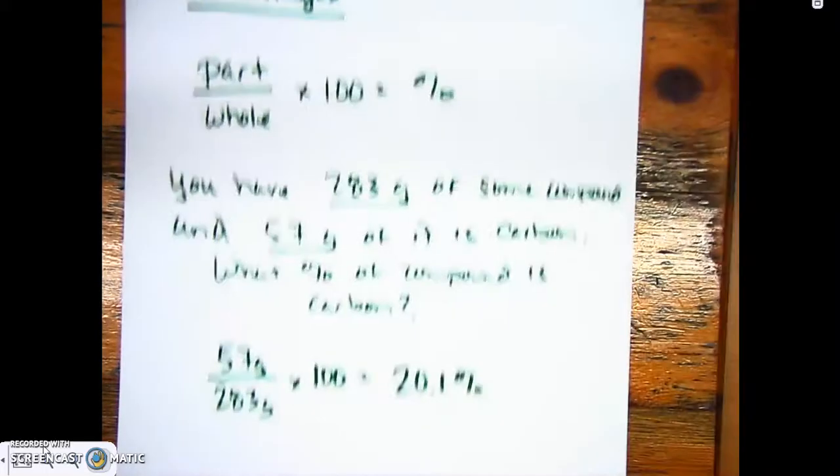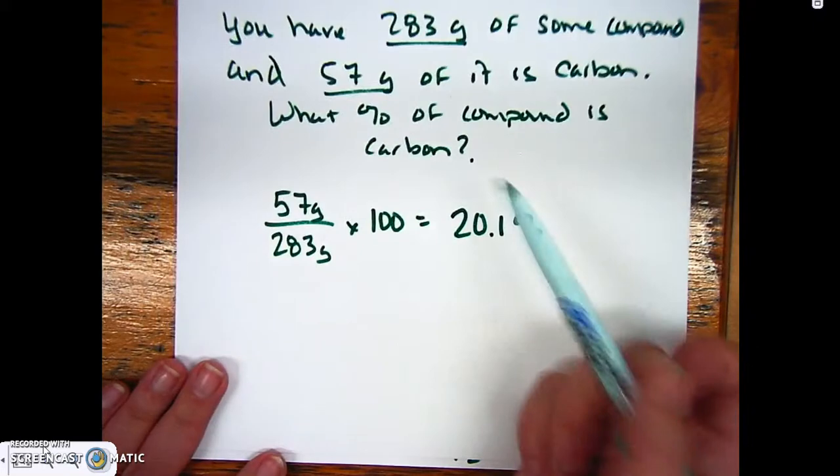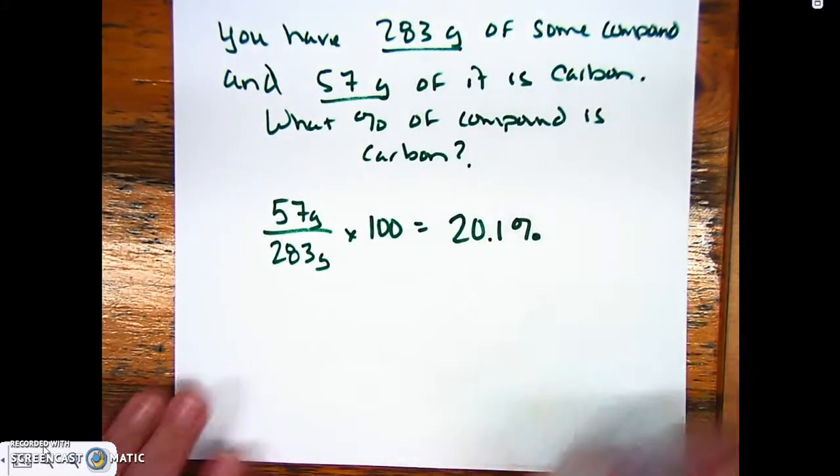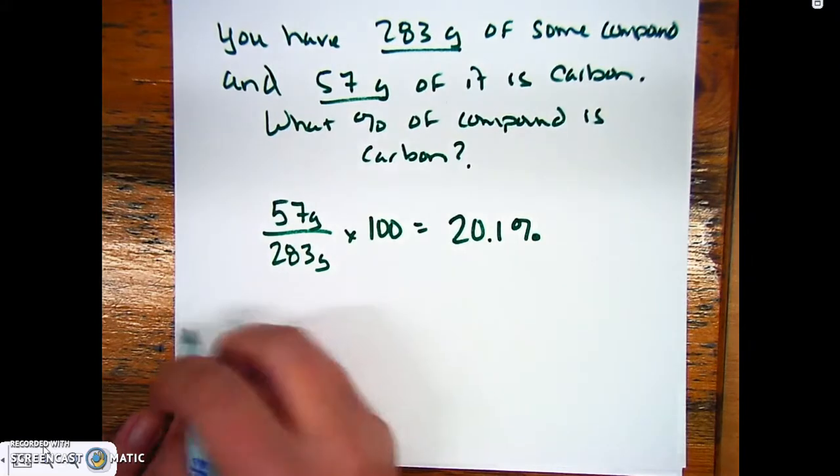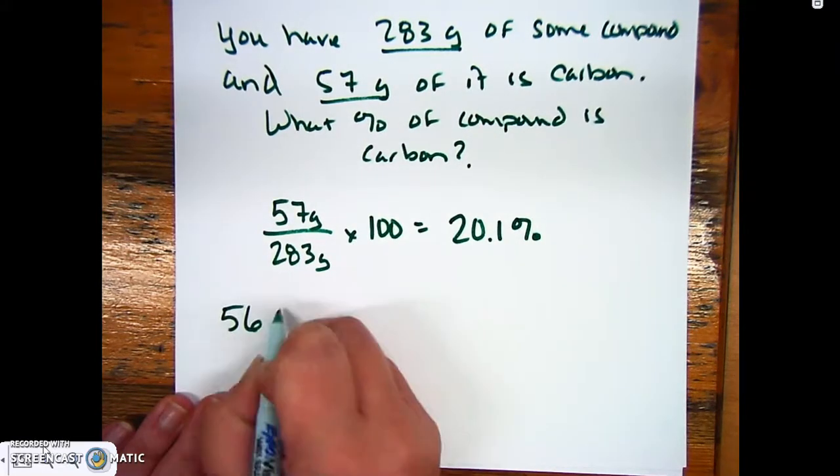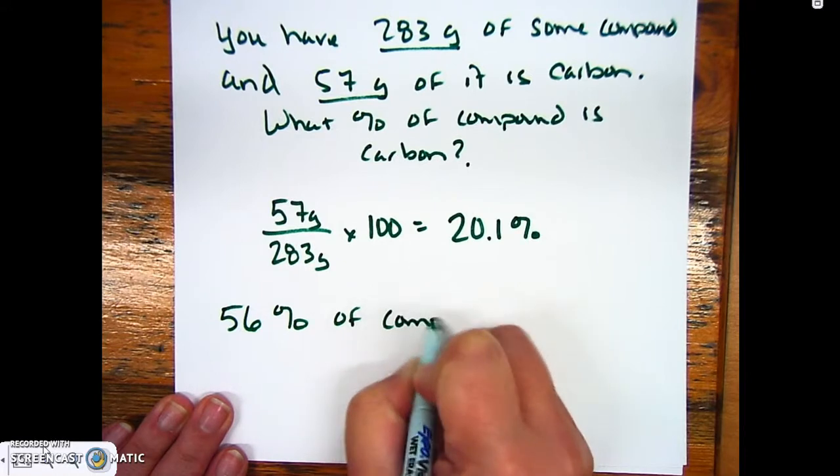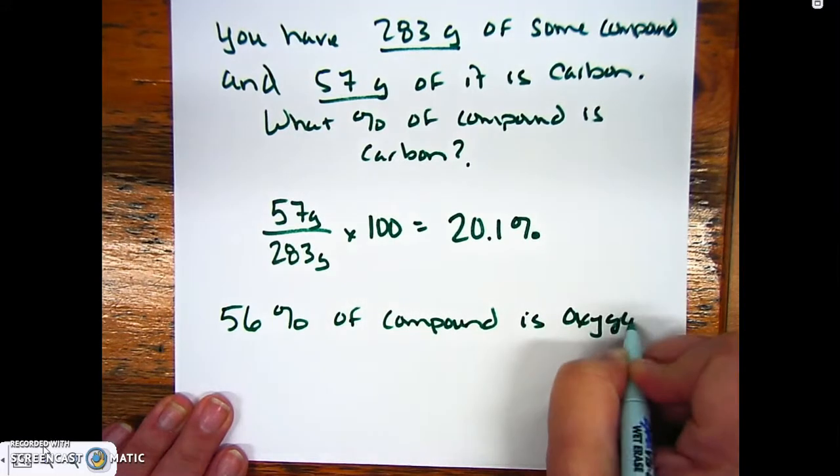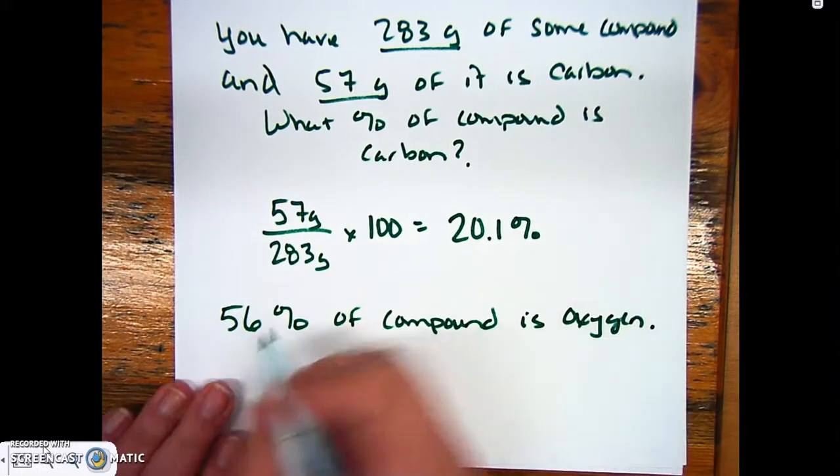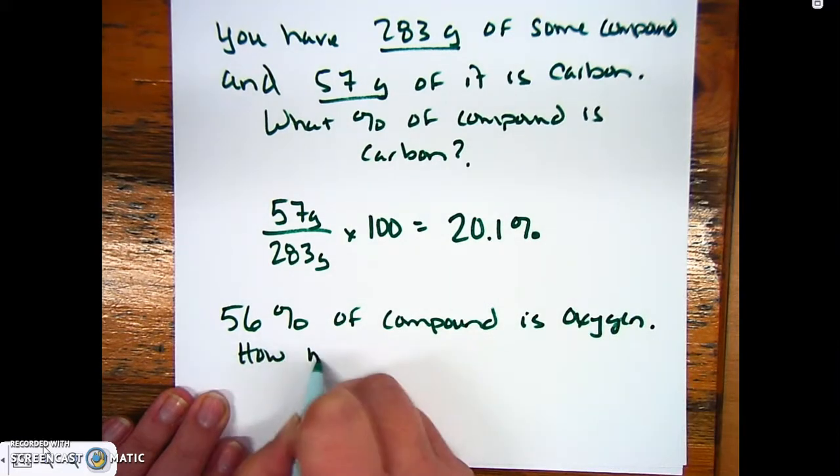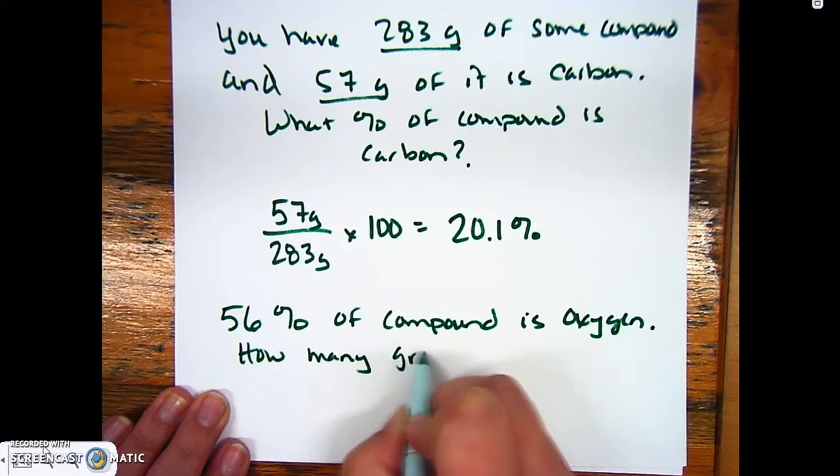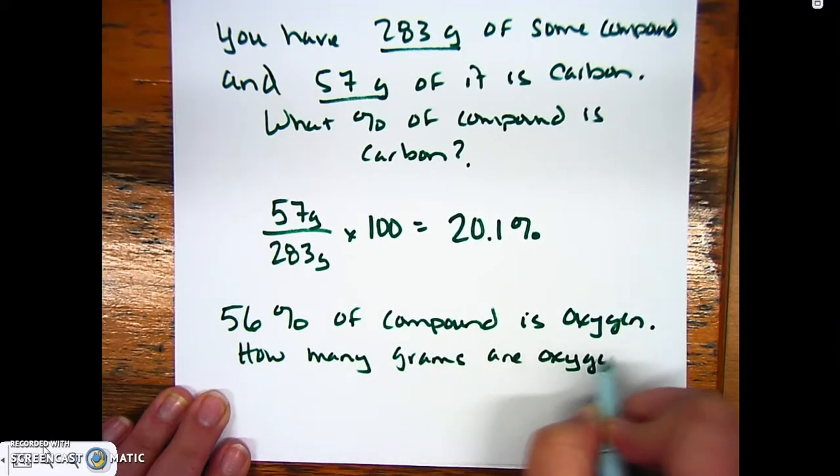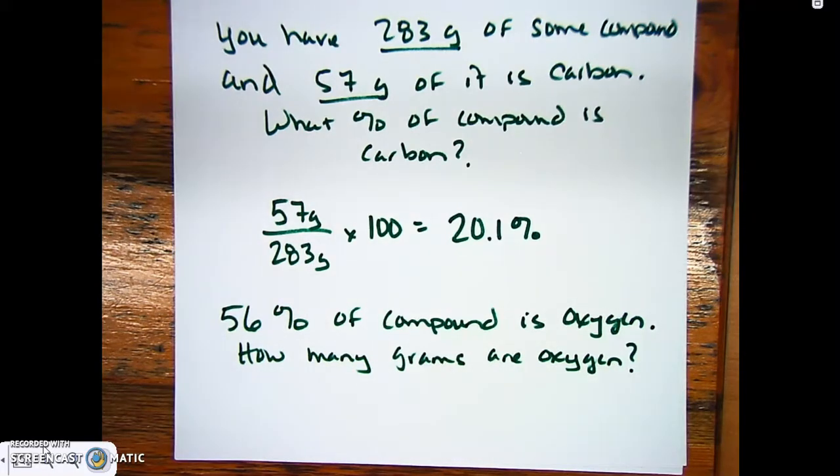Just one more example. Let's say you have 283 grams of this compound and 56% of the compound is oxygen. We want to know how many grams are oxygen. This is where we're given the percent and we know the total.